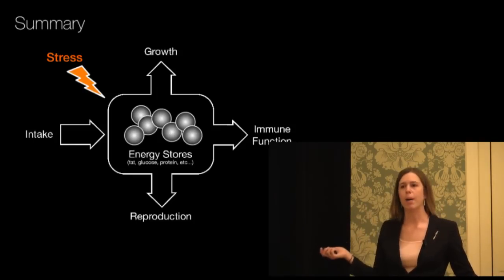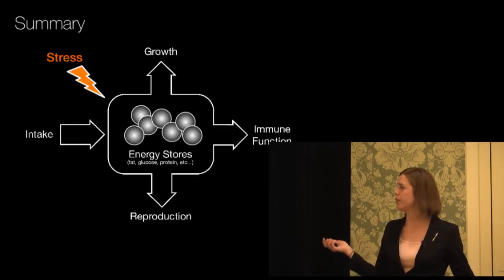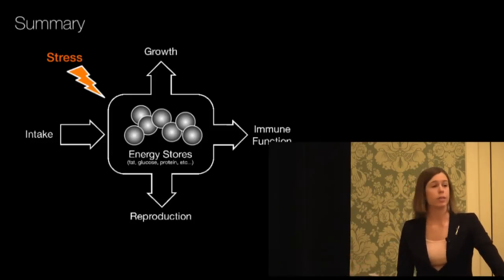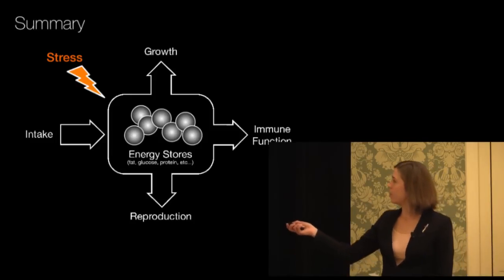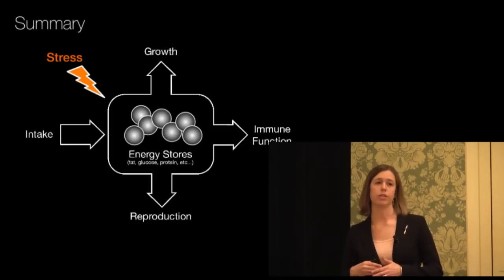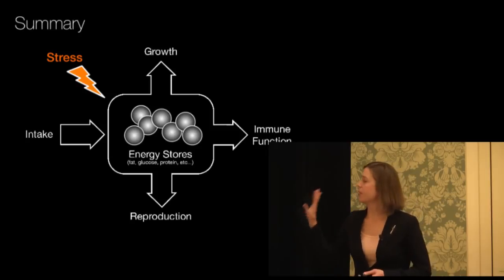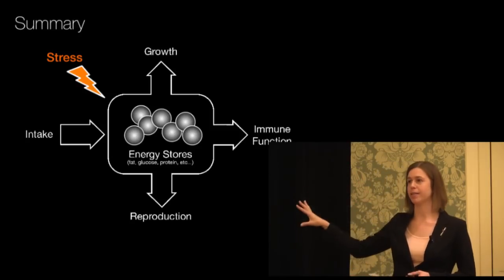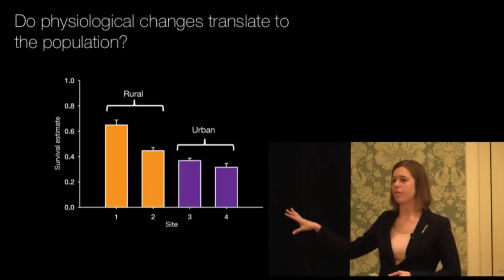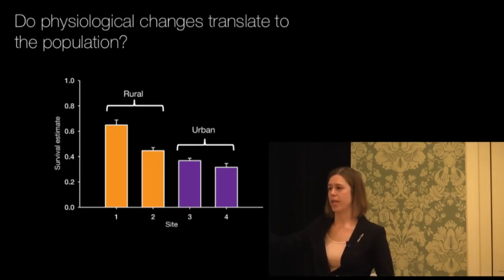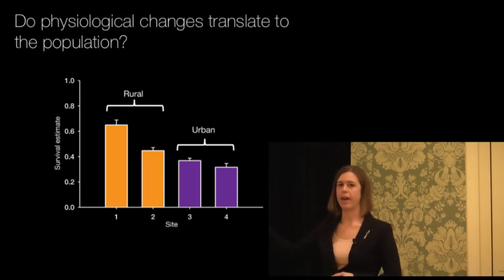So does this relate to the population? We would think this sort of large-scale change in physiological strategy would have population effects. And the answer is yes, it does. These animals in an urban environment have reduced survival relative to the rural populations that we're studying. This is actually only one year out of four and a half years of data. And what I'm very excited about moving forward is we've got a lot of environmental variation in terms of what the weather has been like down in St. George, what water availability has been like.